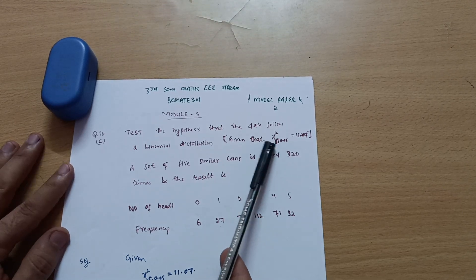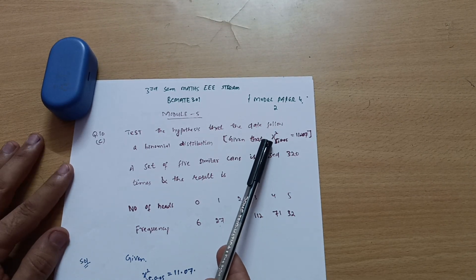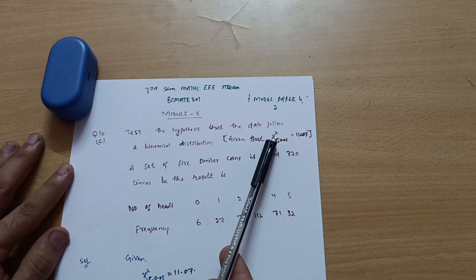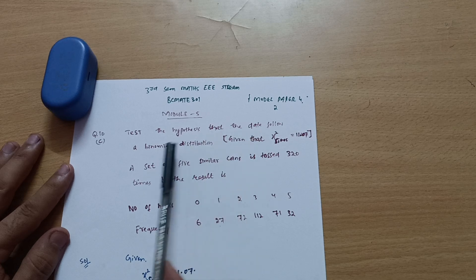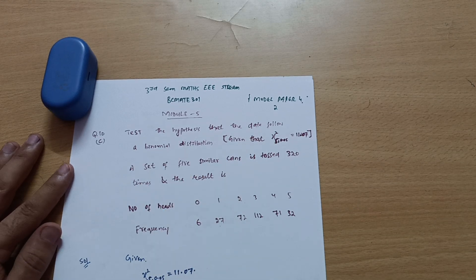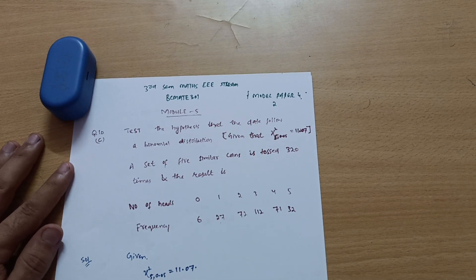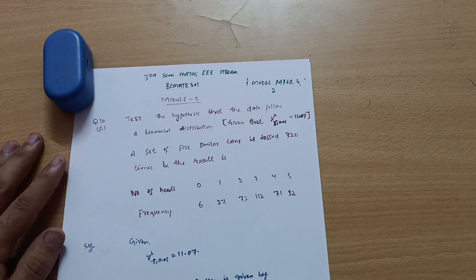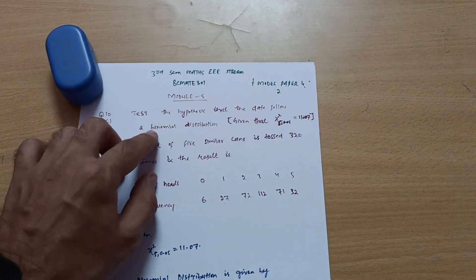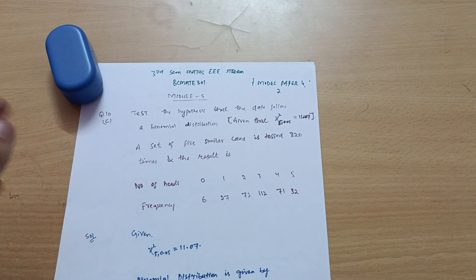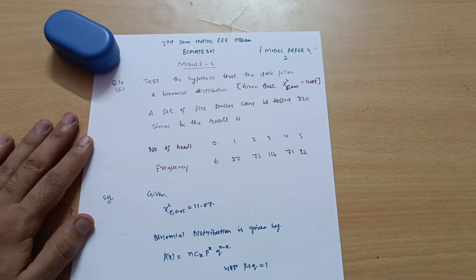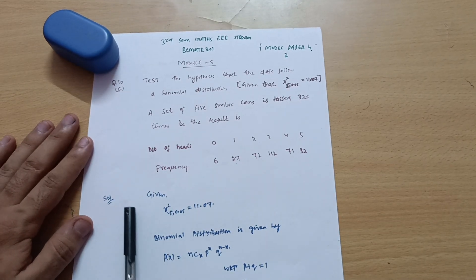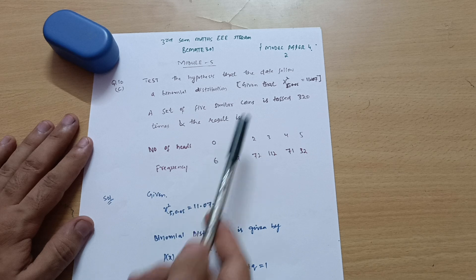Wherever you find chi-square mentioned, it is a problem on chi-square distribution. But here the problem specifies the data follow a binomial distribution, so there is a little difference: we have to use the binomial distribution formula to find the expected values, rather than the simple method used in standard chi-square problems.